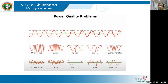Sudden surges come into the system due to any switching happening in the system. Spikes differ from surges — a spike is a single instant where the system just loses its normal behavior and goes up and down. Under voltage is defined when the voltage is below a certain level for longer than one minute.